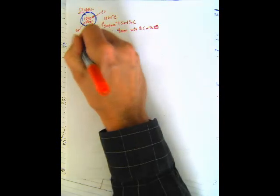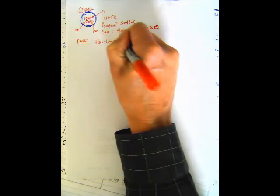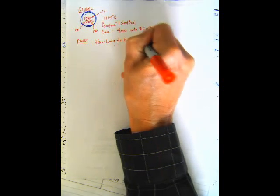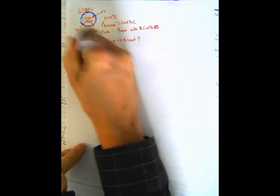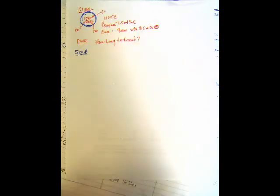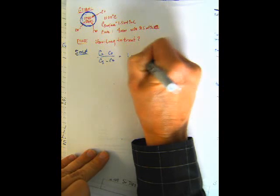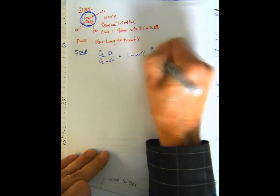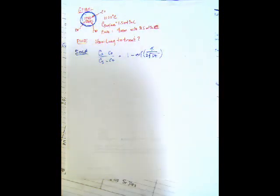All right, so the question here is what we would need to figure out is we want to find how long this needs to be treated. Okay, so the solution, obviously this is second law. So we're going to use the solution to Fick's second law. And there's two different forms. You can rearrange slightly to get rid of the one minus. This is the one that our text uses, so that's what we'll work with.